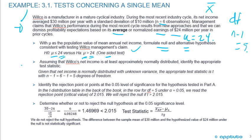Assuming that Wilco's net income is at least approximately normally distributed, identify the appropriate test statistic. So we're doing the t-test concerning a single mean in this case. Given that net income is normally distributed with unknown variance, the appropriate test statistic is a t-stat. And the degrees of freedom is six minus one equals five degrees of freedom.